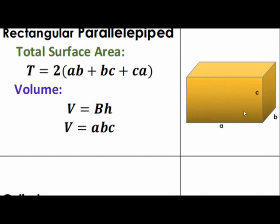This is the first pair, the second pair, and the third pair. These opposite faces are parallel and congruent to each other. Applying the area of a rectangle, the area of the base is AB — that is, length times width — and we have two of these. The area of the narrower side is BC; we also have two of these. And the area of the wider side is CA or AC, and we also have two of these.